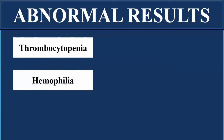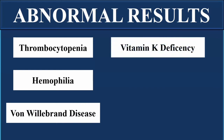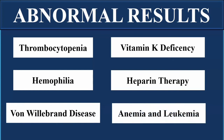Other conditions indicated by abnormal clotting time include hemophilia, in which there is a deficiency of certain clotting factors; Von Willebrand disease, in which the Von Willebrand factor involved in clotting is deficient; vitamin K deficiency, which leads to prolonged clotting time; heparin therapy, which acts as an anticoagulant and can prolong clotting time; and anemia and leukemia, which are blood diseases that decrease platelet production and affect blood clotting.